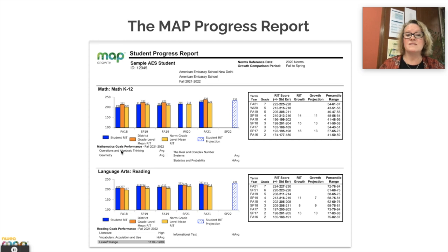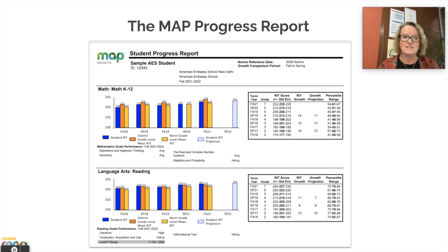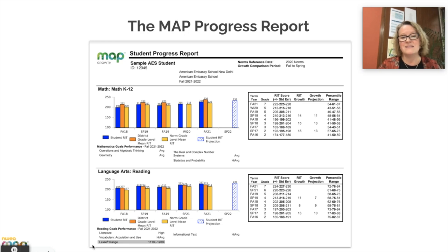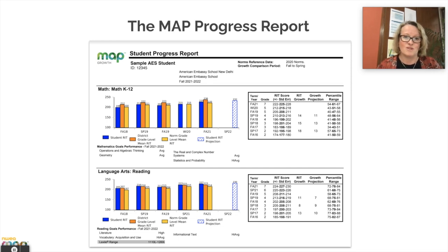You will see here below where it says mathematics goal performance areas. This is mathematics broken down: looking at operations, algebraic thinking, geometry, stats and probability, and real and complex numbers. We are able to break mathematics down further rather than just saying improvement in math — we can pinpoint what we want to improve on. The same applies for reading, as you will see on this screen. I also want to point out the Lexile range for reading. This is an important number that we are informing our students about and want you to know as well, as it helps us choose appropriate books for our students.